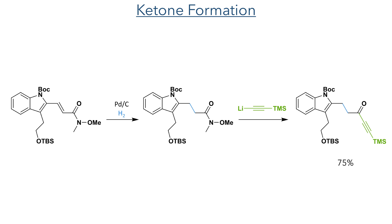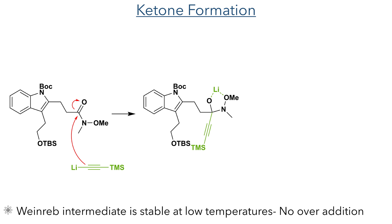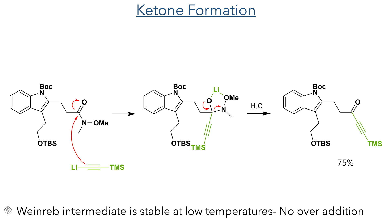The carbon-carbon double bond of the newly installed alpha-beta unsaturated ketone was then hydrogenated using hydrogen gas and palladium on carbon as a catalyst. The product of this reaction was used without purification in the next step, which was reaction with lithium trimethylsilyl acetylene, producing the product in a 75% yield over two steps. In this reaction the alkyne adds to the Weinreb amide, which forms a chelated lithium-stabilised intermediate. This intermediate is stable at low temperatures and does not hydrolyze to form the ketone until aqueous workup, which prevents the reaction from undergoing over-addition.